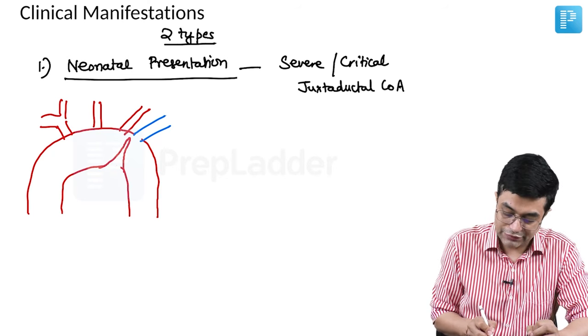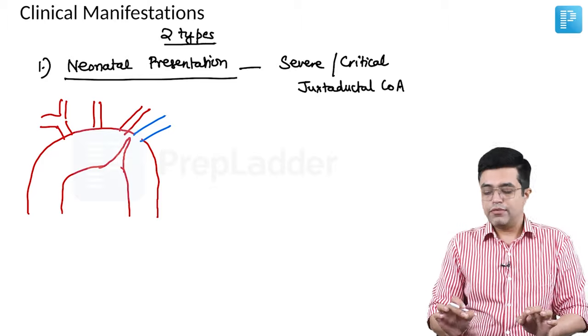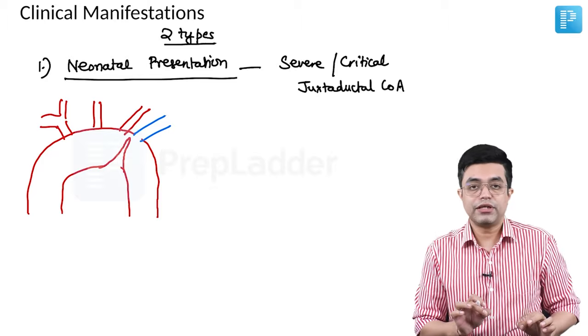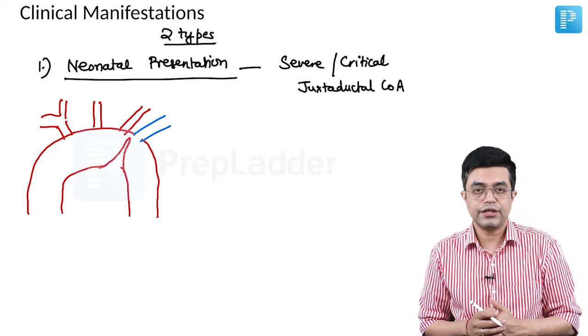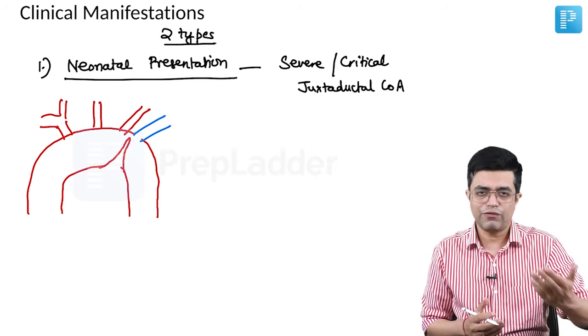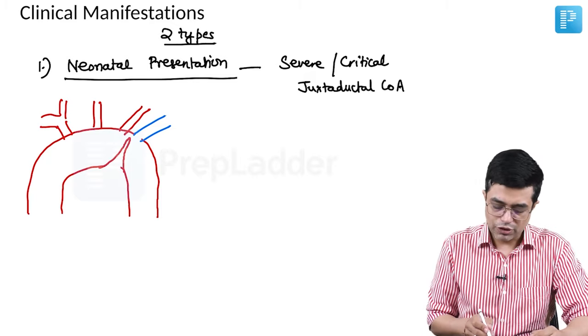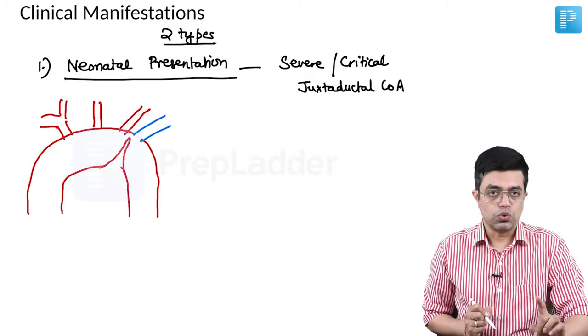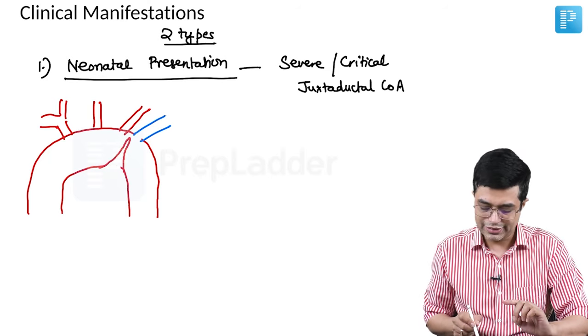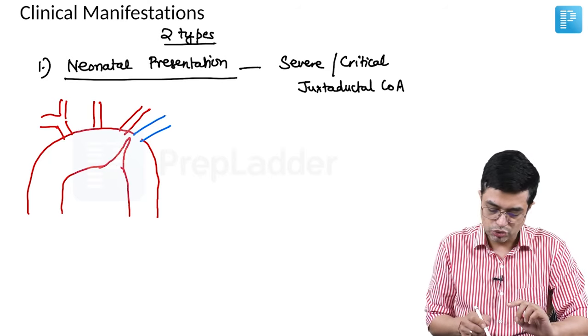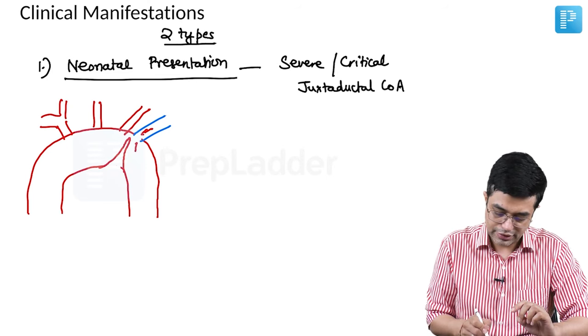Now imagine there is a severe critical narrowing in the patient somewhere in a location like this. Most of the neonatal severe forms which manifest have a narrowing very similar to this. Because if the narrowing is distal to the insertion of ductus arteriosus, many of them will not be compatible with life and they often get aborted in utero.